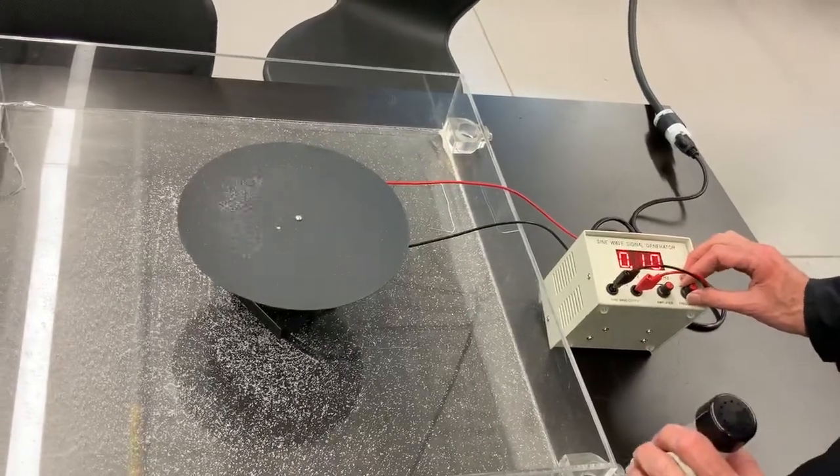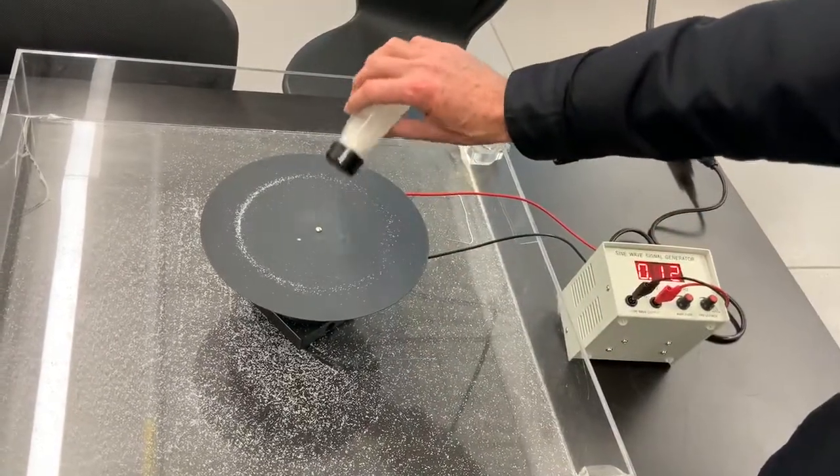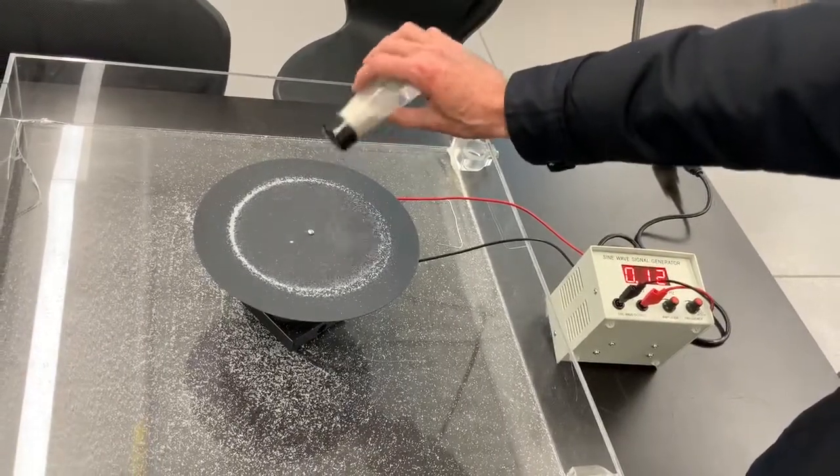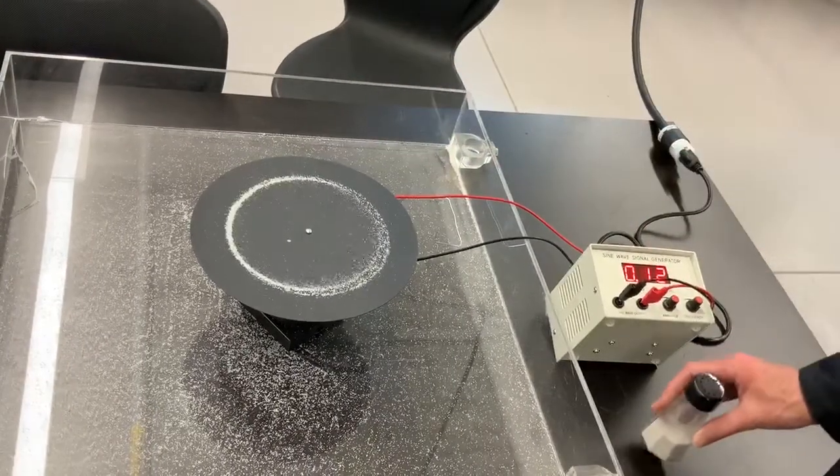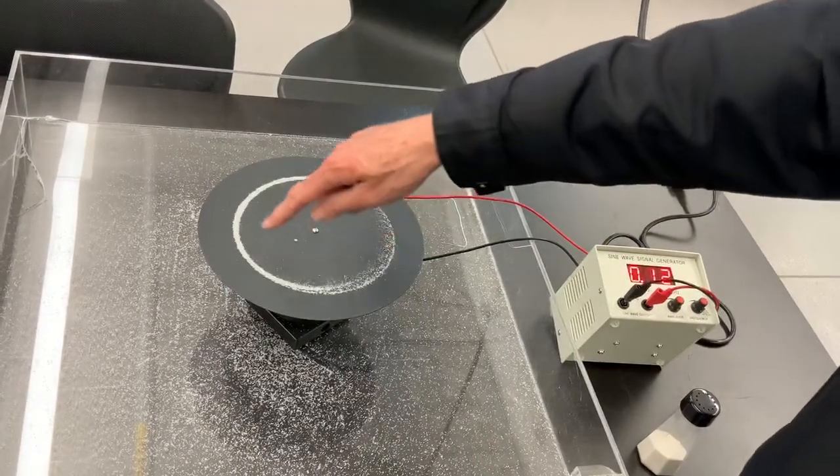If we bring it up a little bit higher and I add some more sand, we can now see a well-defined resonant mode. The node is defined by where the sand is appearing, making a nice circular pattern.